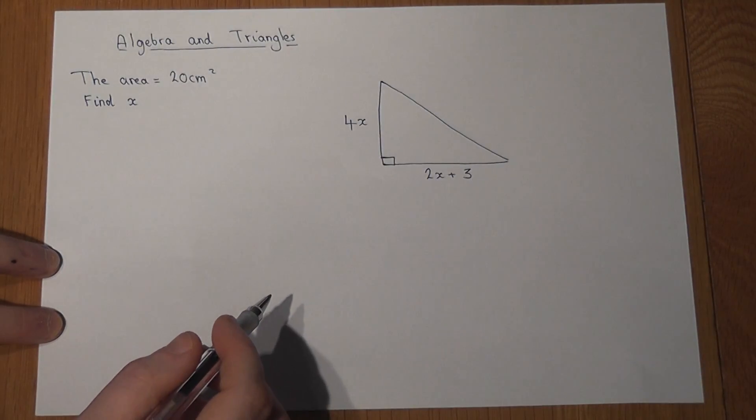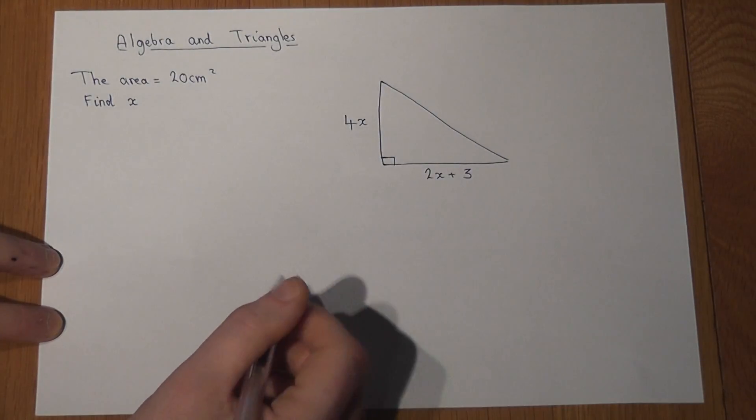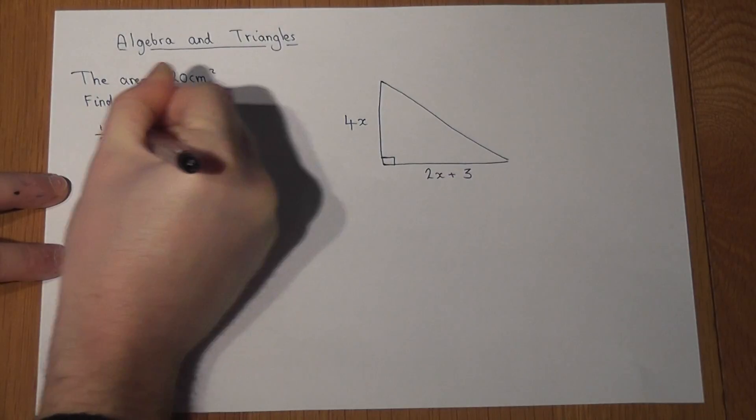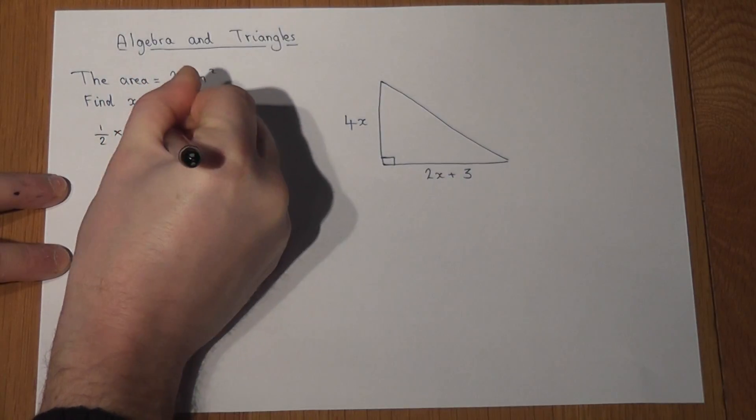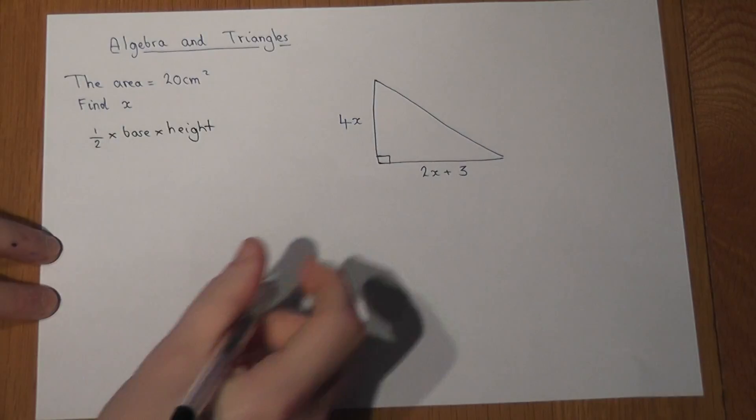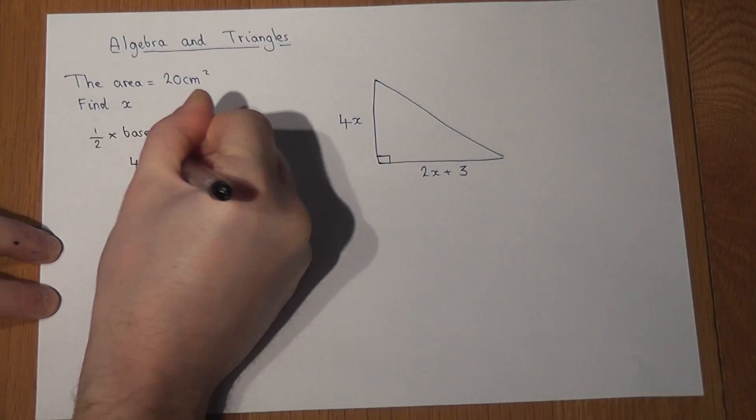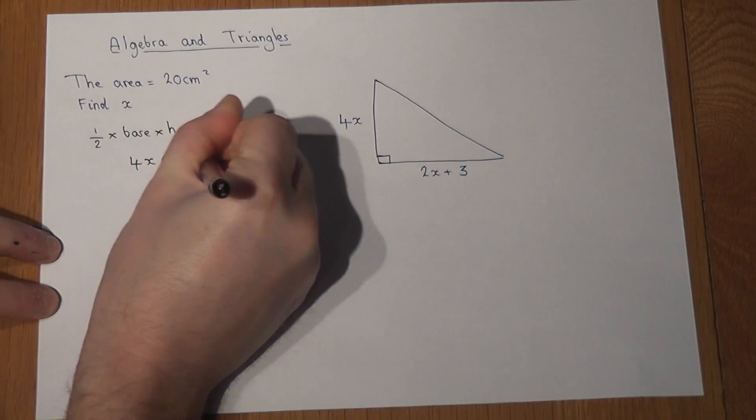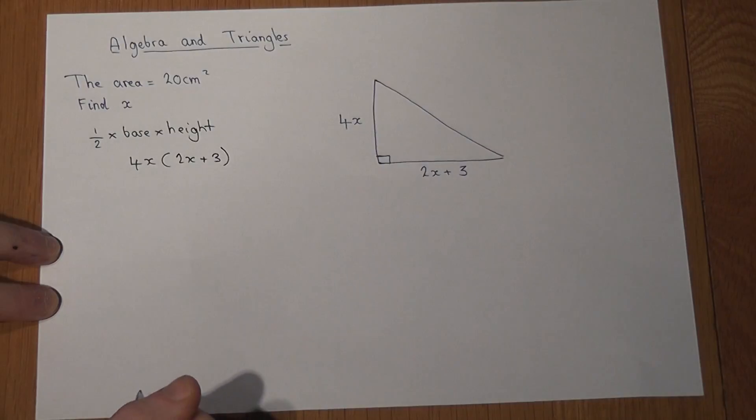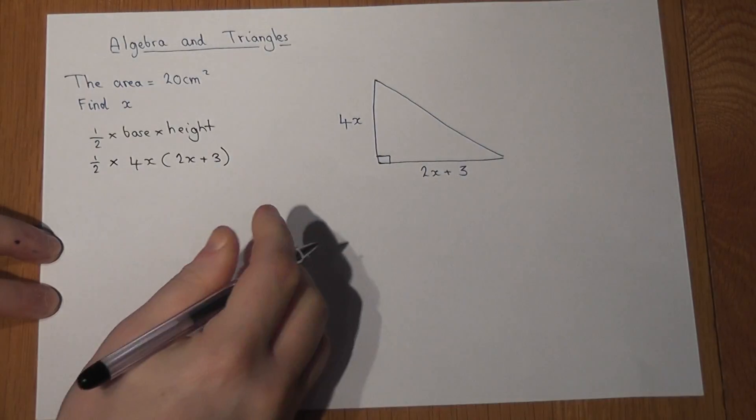Step one is we can find an expression for the actual area, which is a half times the base times the height. The base times the height is 4x times 2x plus 3, and it's a half of that expression.